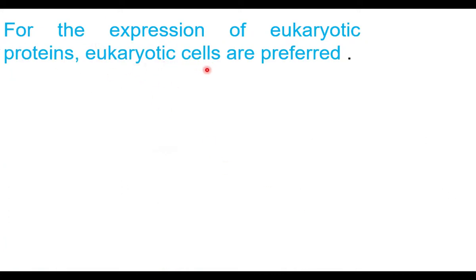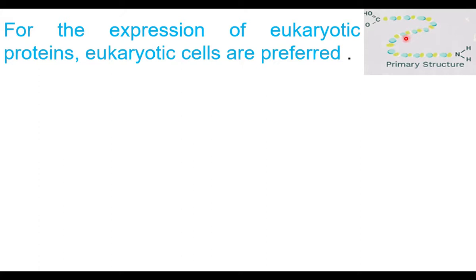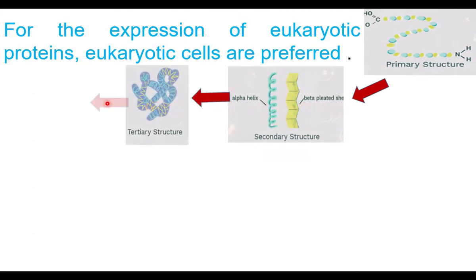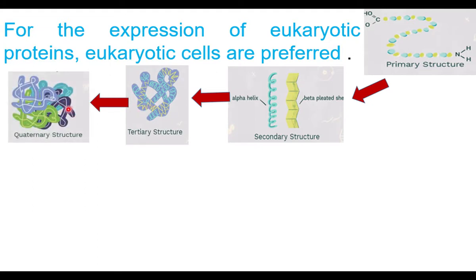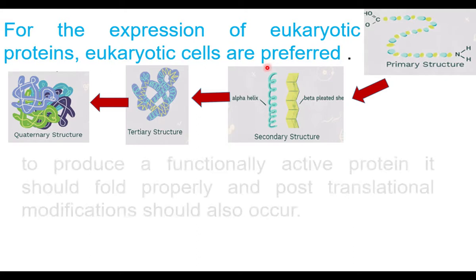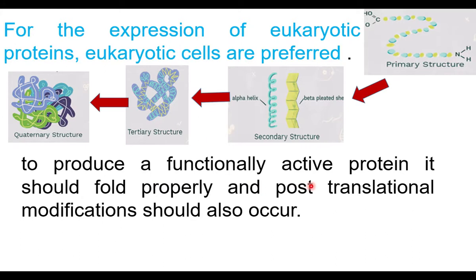For the expression of eukaryotic proteins, eukaryotic cells are preferred as host cells. E. coli is a prokaryotic cell. If we want human or animal protein, prokaryotic cells can produce it, but the protein is formed as a linear chain of amino acids — the primary structure. In eukaryotes, the primary structure undergoes folding to form secondary, tertiary, and quaternary structures, making the protein functional. This folding is impossible in prokaryotic cells.